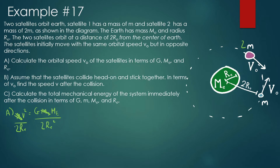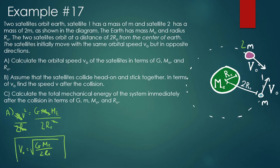We see that one of the radii cancels out, so we can ignore the squared. And now we can find v_initial, which is going to be equal to the square root of G·M_E over 2r_E. This is the velocity at which the satellite is going around the planet.